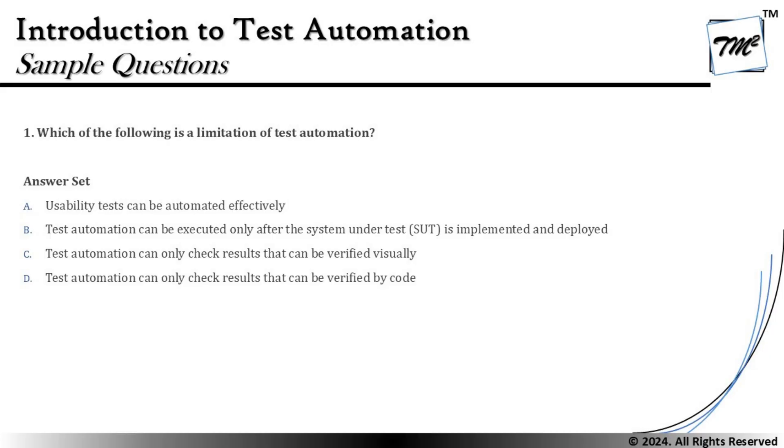The first question on our screen is number 1, which says: which of the following is a limitation of test automation? As a reminder from our past two tutorials, we understood there could be different advantages, disadvantages, and limitations. Sometimes going through the options can remind us what is an advantage, what is a limitation, or what has no relevance to automation at all.